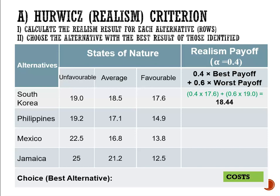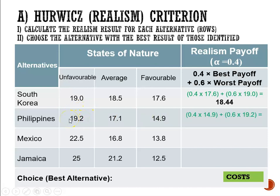For the Philippines, we will have 0.4 multiplied by the lowest cost, which is the best result — 14.9 — plus 0.6 multiplied by the worst outcome, or the highest cost of 19.2. And that gives us 17.48.